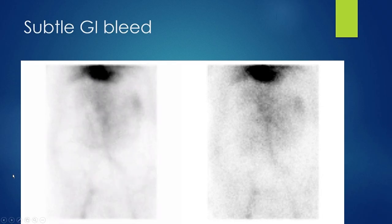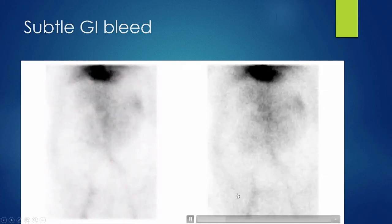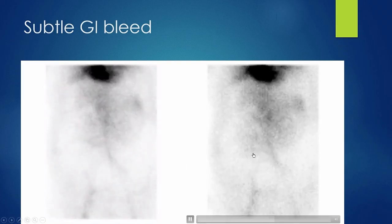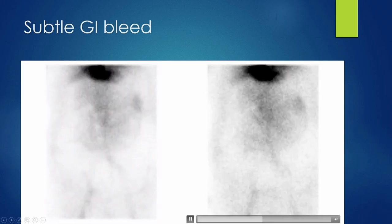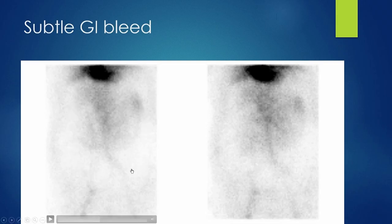Here is a subtle GI bleed — having a baseline flow image is useful, and careful tracking of activity is important. There is subtly increased uptake in a specific area over the first 60 minutes and into an additional 30 minutes. Another notable finding is a large photopenic area — ascites — with mild haze in the middle because bowel is squished together by the ascites. In cirrhotic patients, it can be much more difficult to localize bleeding.